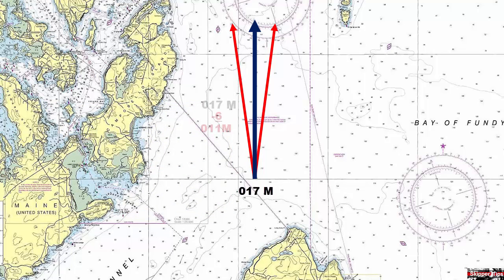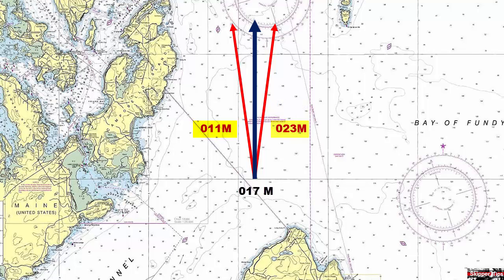Now let's plot two additional course lines to show how this magnetic disturbance might affect our base sailing track line. On the left side we would subtract six degrees from our base magnetic course line of 017 and plot an additional course line in the direction of 011 degrees magnetic. Next we would add six degrees to our base course line of 017 and plot an additional course line of 023 degrees magnetic on the right side of our base sailing track line.